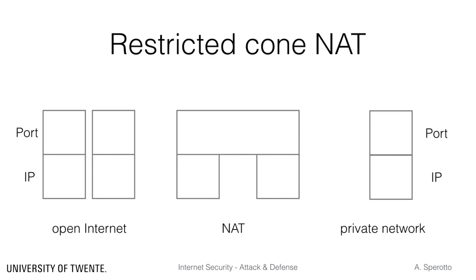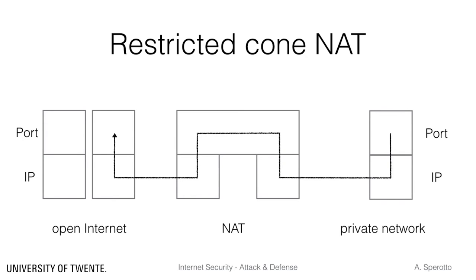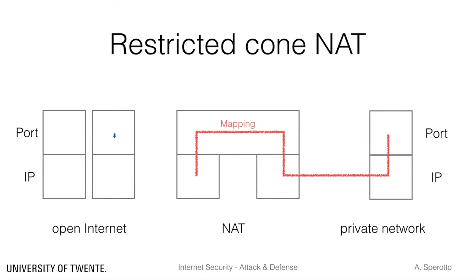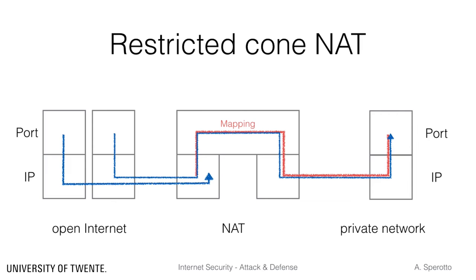A restricted-cone NAT, or address-restricted-cone NAT, works in a very similar way to full-cone NAT, but places additional requirements on which external IPs can contact the private network. Once a connection from the private network is allowed, a mapping for those public and private IP port pairs is created. Traffic from an open Internet host that previously received traffic from a host in the private network is always allowed — note that only the source IP address matters here, while the port number is not considered. If traffic for the private network reaches the NAT from an IP that was never contacted by a host in the private network, this traffic is dropped.